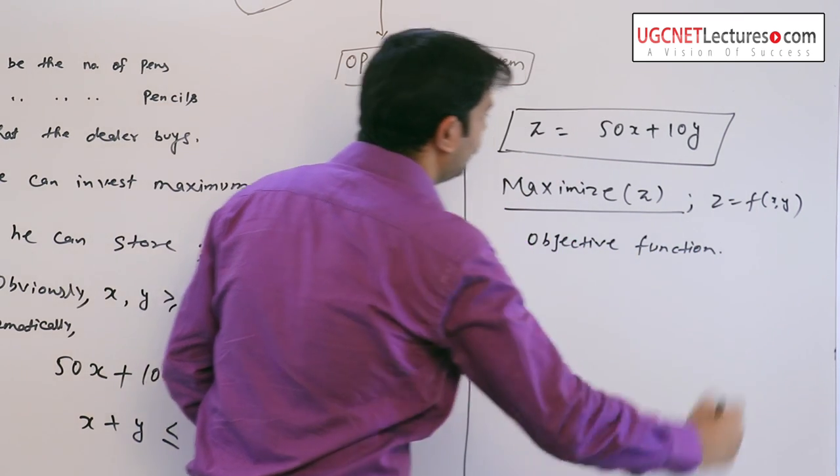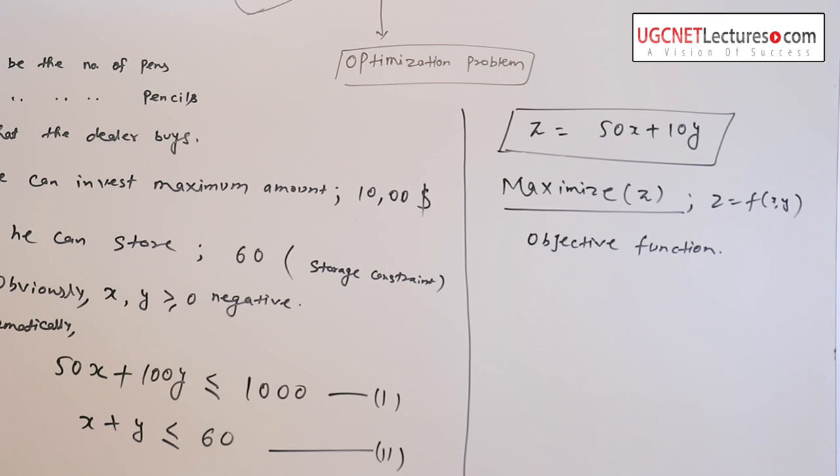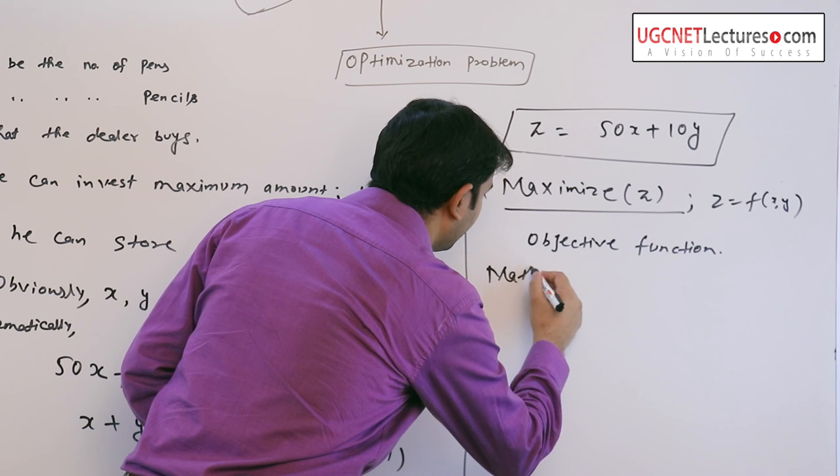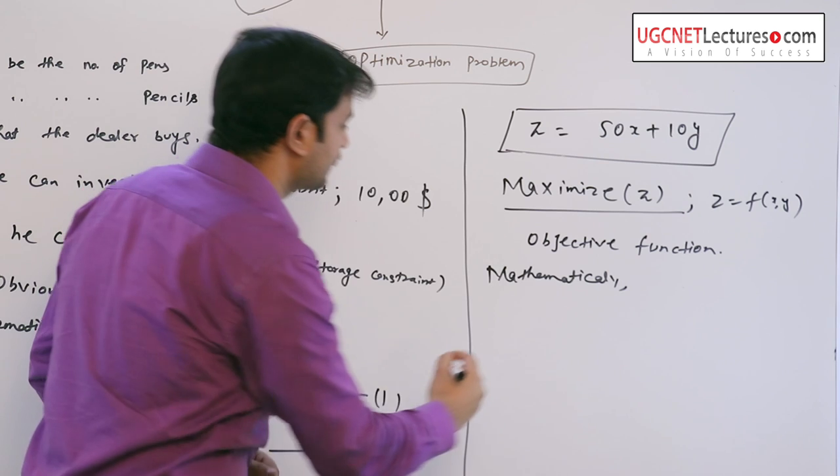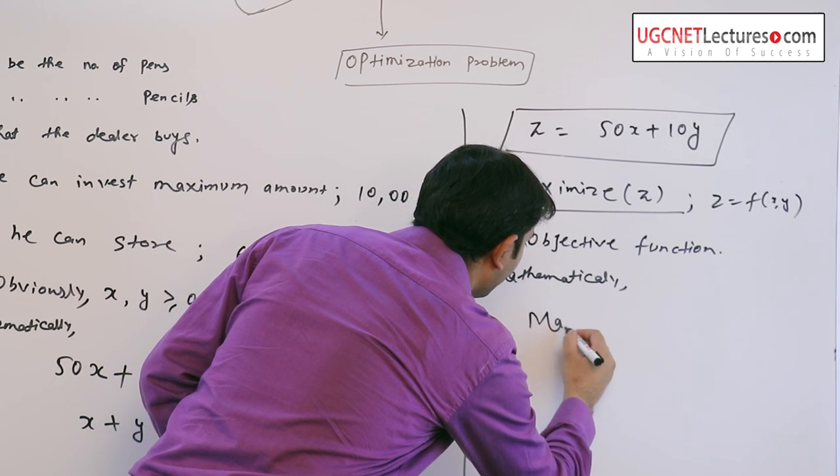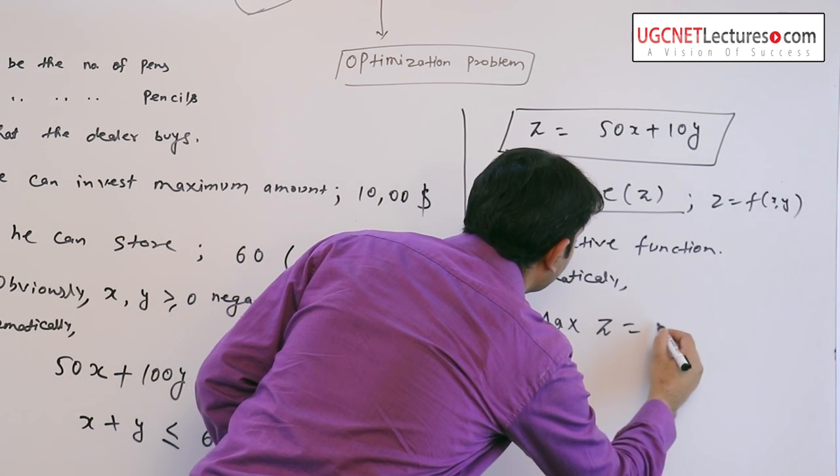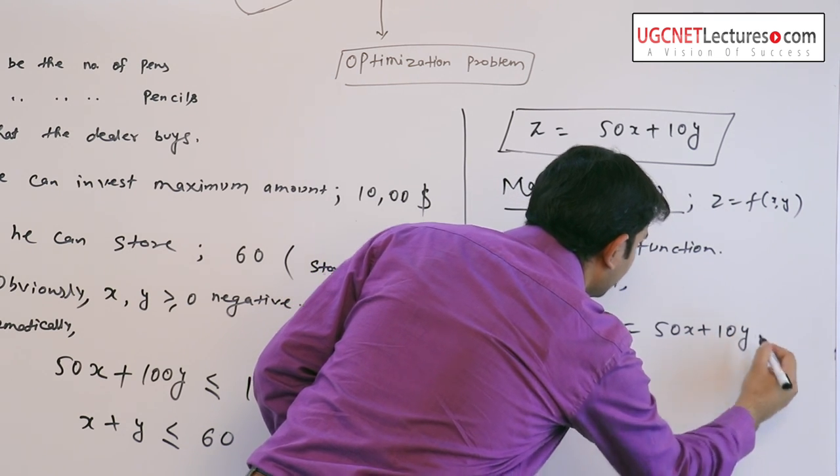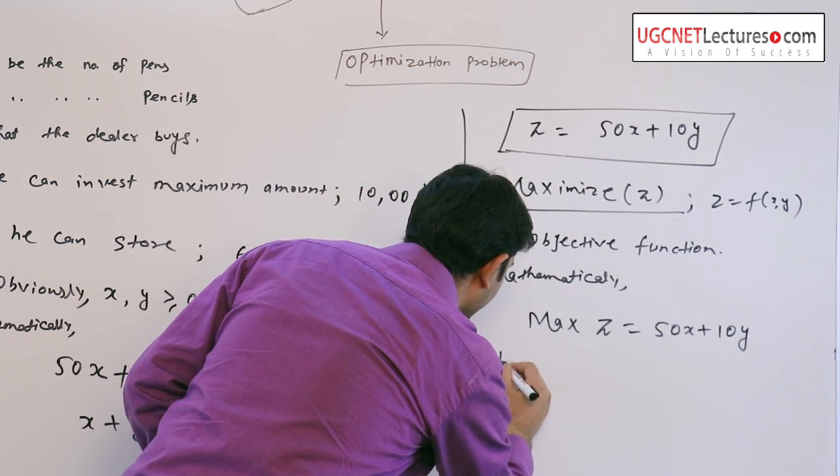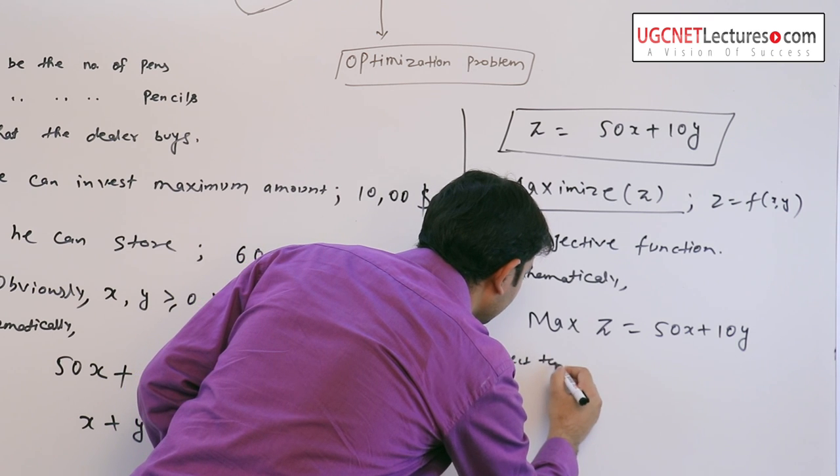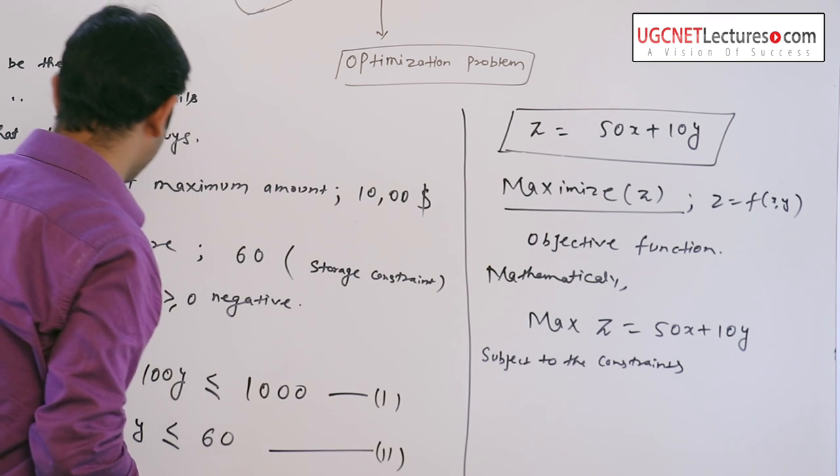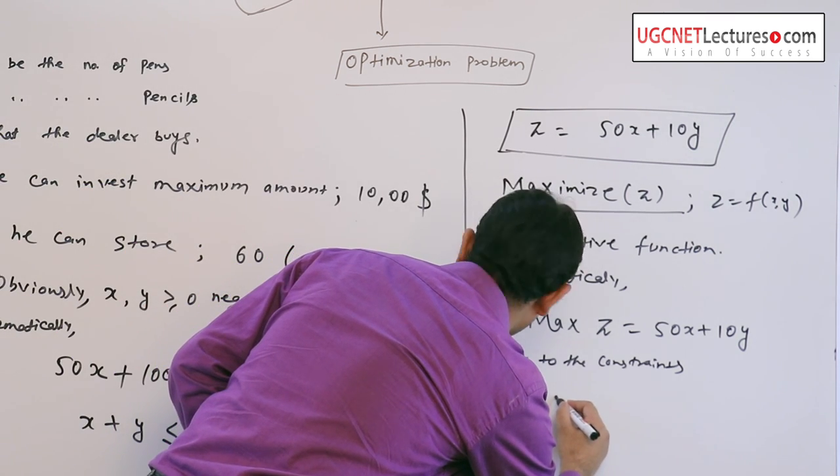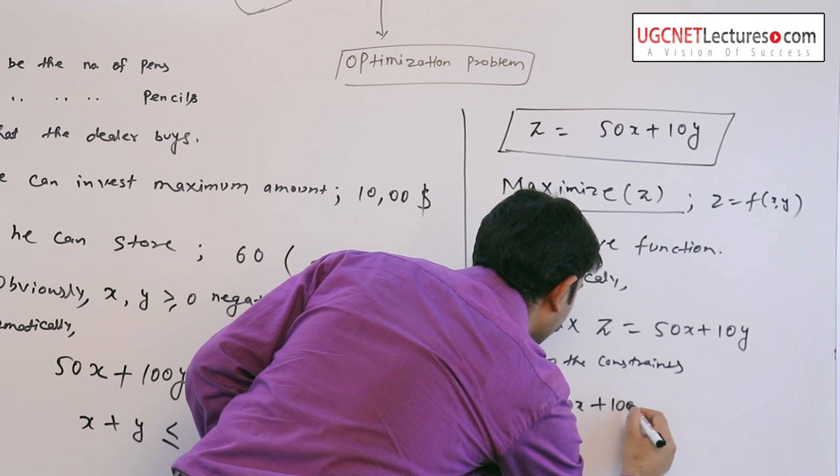So if we rewrite all the things mathematically, the problem reduces as: maximize z, subject to the constraints. The first one is 50x + 100y ≤ 1000.